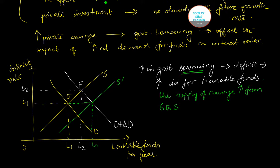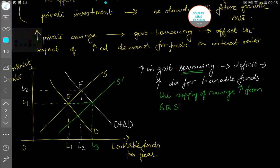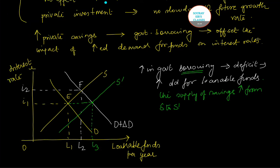So say it shifts to S dash. And say this is L3. I'll use blue ink and now we are sorted.